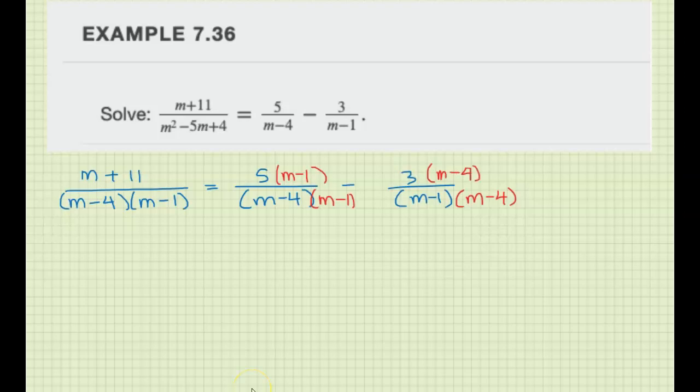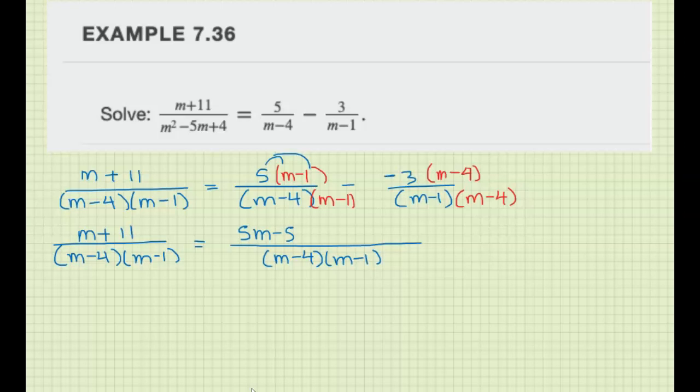We have m plus 11 over m minus 4, m minus 1. We'll bring these together to make one fraction. So m minus 4 and m minus 1 is the denominator. We're going to distribute 5m minus 5, distribute the negative 3 minus 3m plus 12.